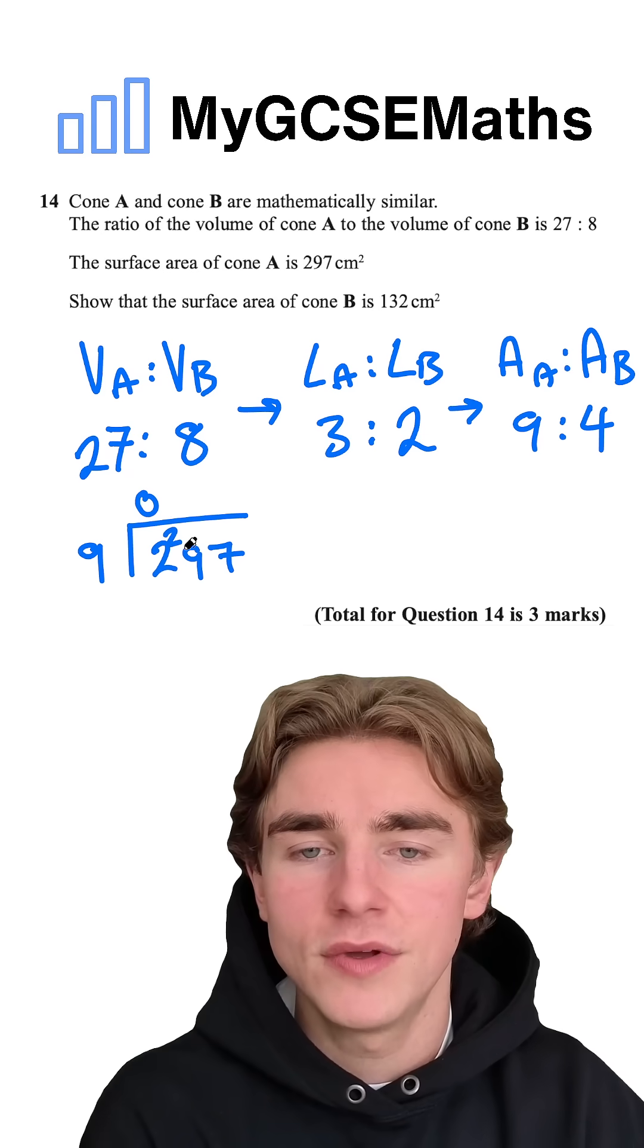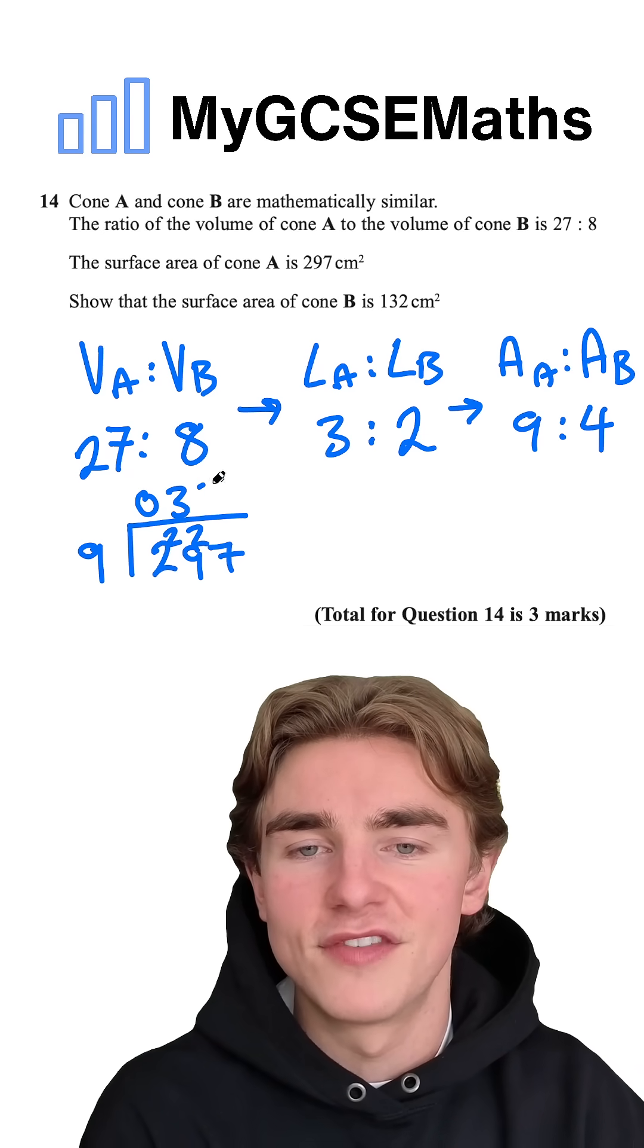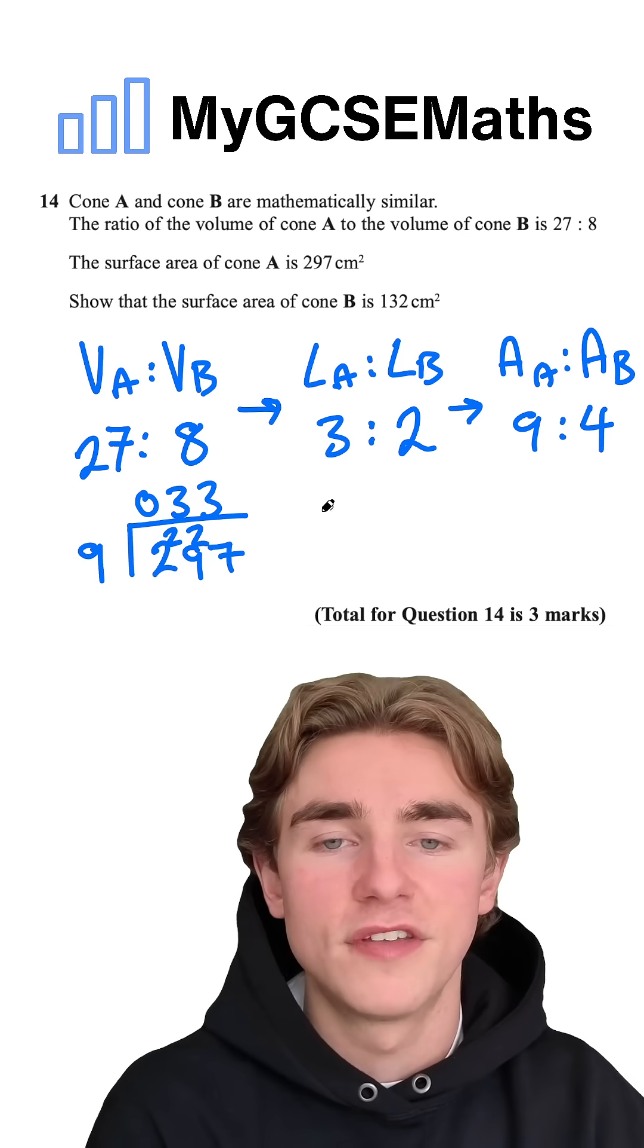9s into 2 is 0 remainder 2. 9s into 29 is 3 remainder 2. 9s into 27 is 3. So 1 part is equal to 33.